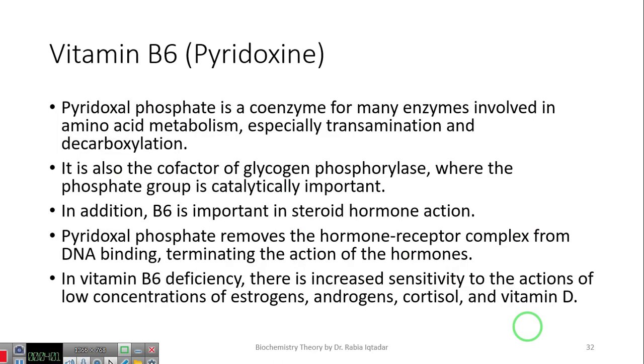Pyridoxal phosphate is a co-enzyme for many enzymes involved in amino acid metabolism, especially transamination and decarboxylation. Vitamin B1 is for carbohydrate metabolism. Vitamin B6 is important for the metabolism of amino acids. Which reactions will be catalyzed? Transamination and decarboxylation. You have to remember which vitamin is important for what type of reaction. Like vitamin C is important for hydroxylation. Vitamin B1 is important for oxidative decarboxylation. And vitamin B6 is important for transamination and decarboxylation.